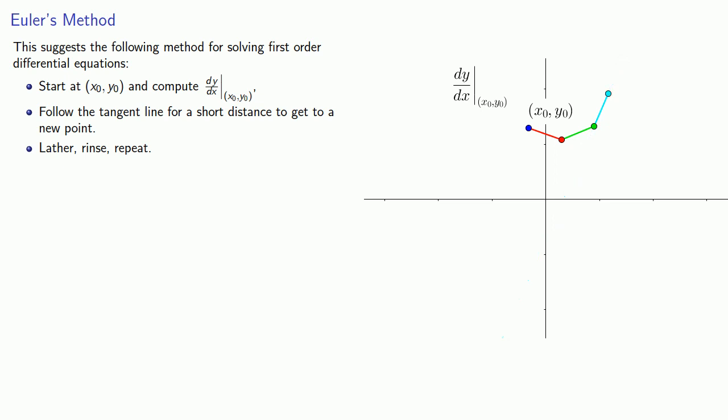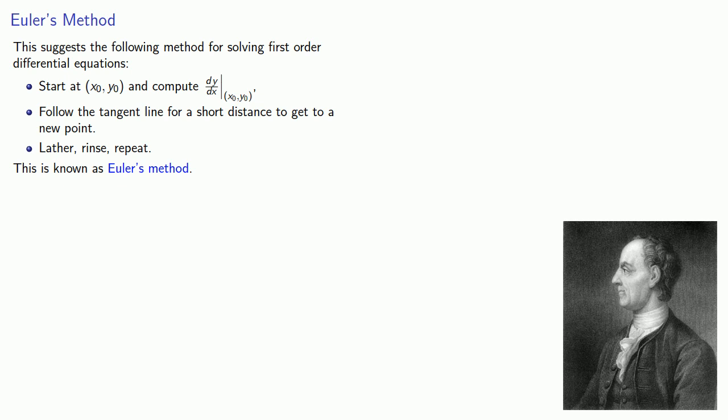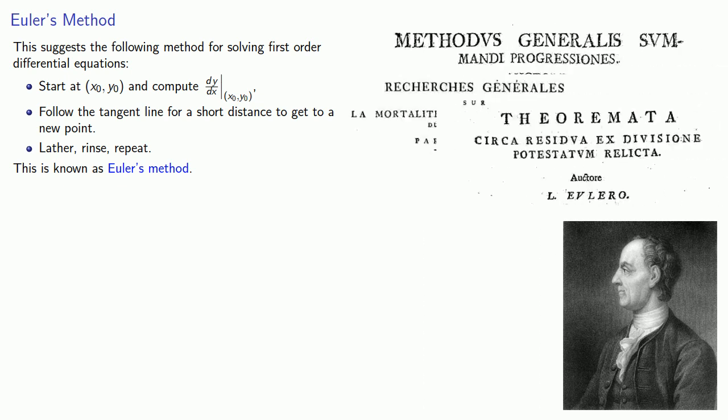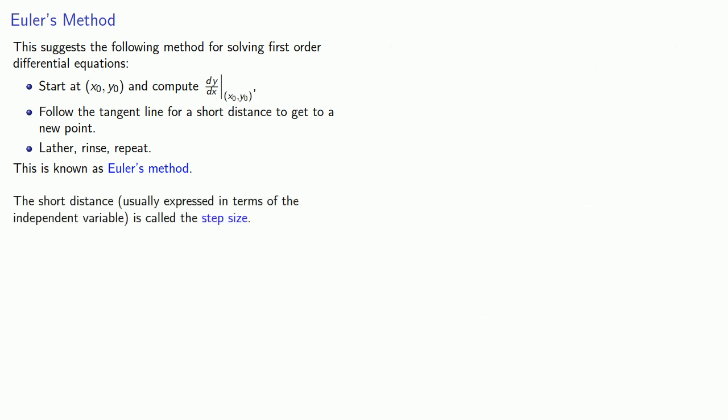This method is known as Euler's method, after an 18th century mathematician who specialized in, well, actually, everything. The short distance that we're following the tangent line, usually expressed in terms of the independent variable, is called the step size.